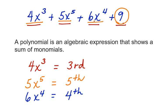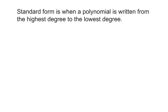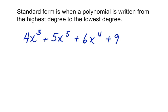What about standard form? What do we mean when we talk about standard form? Standard form is when a polynomial is written from the highest degree to the lowest degree. Looking at the polynomial from the previous screen, is it written from the highest degree to the lowest degree? No. You can see that the lowest degree is here, the highest is here, and there's a middle degree here.